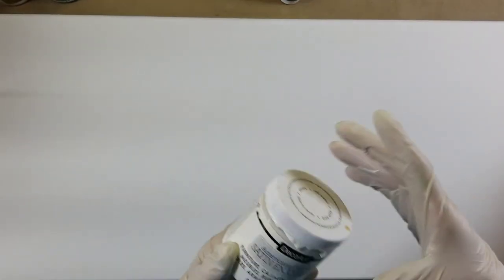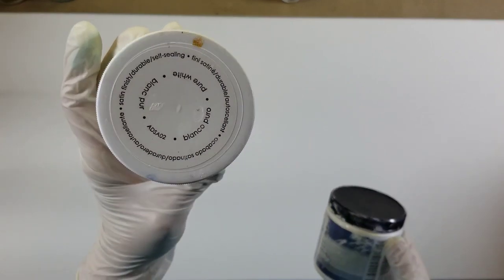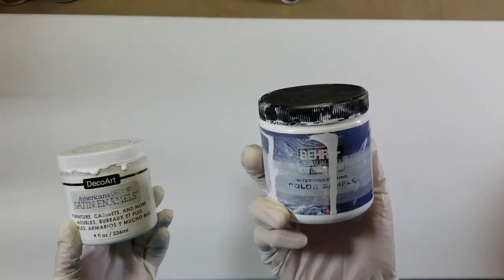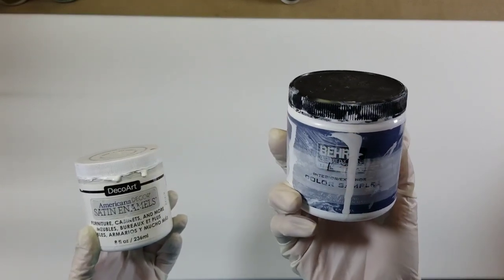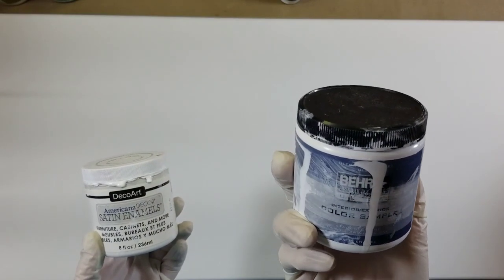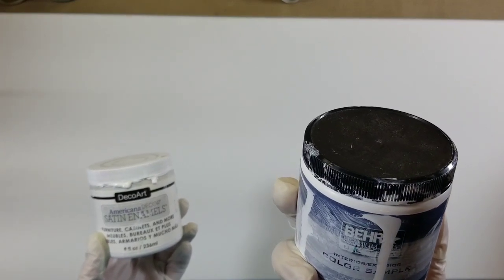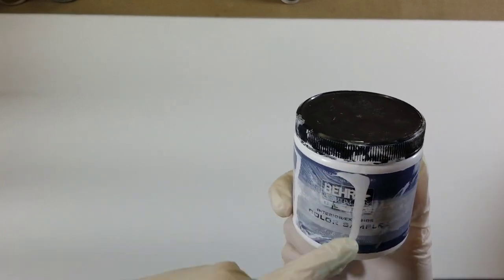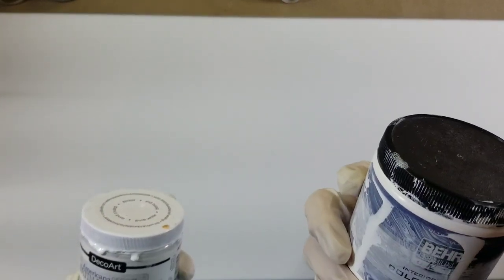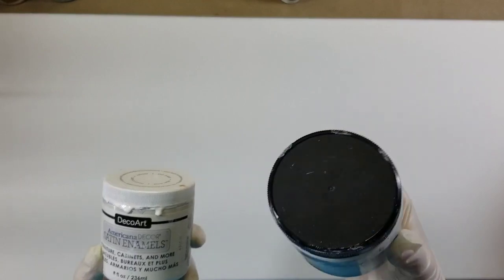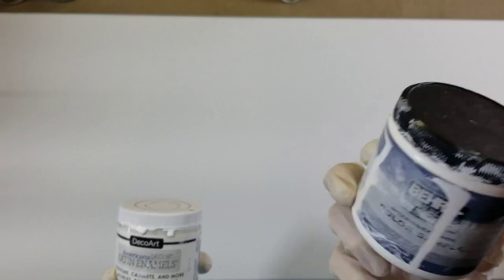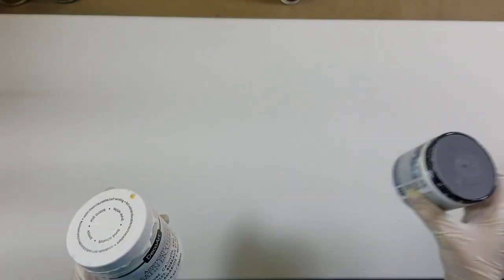I also have mixed up some Pure White Satin Enamels. I used the Bayer Interior Satin, the indoor outdoor house paint. This was just a little sample size that I like to buy instead of those big old containers.